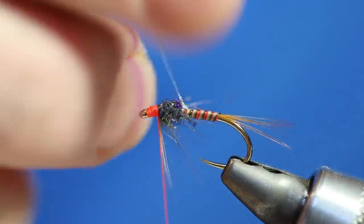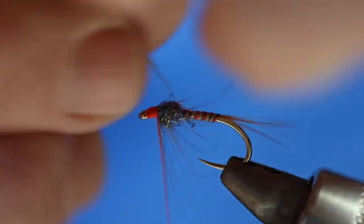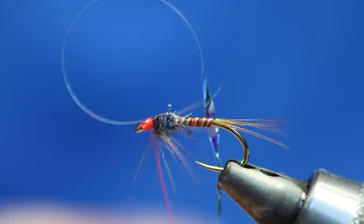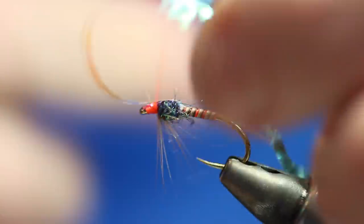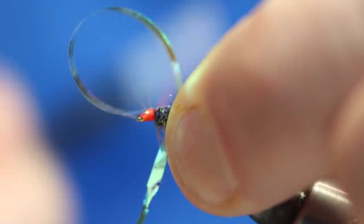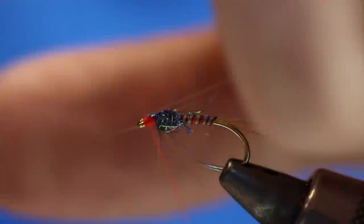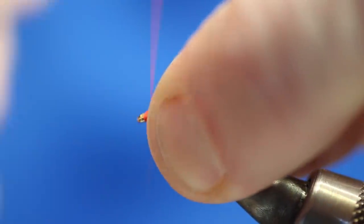So what I'm going to do with this is I'm going to pull it over the back. But what I like to do, catch it in, and it's the same with the buzzers if you've watched my other videos. I like to go forward and then what I'll do is I'll pull the thorax cover backwards and then tie it off from there.